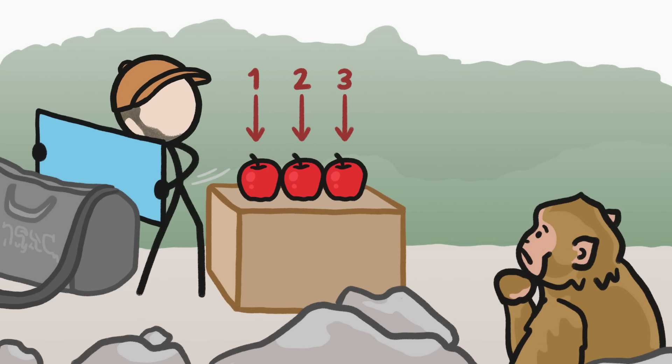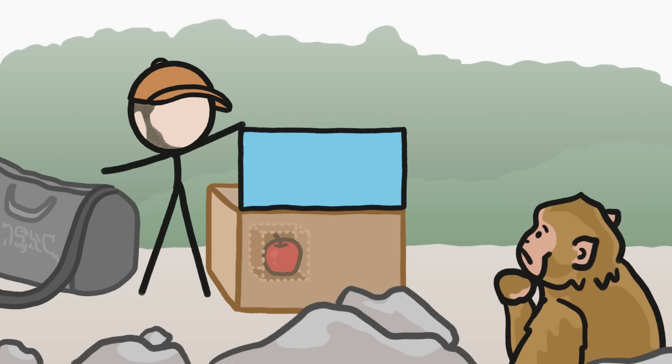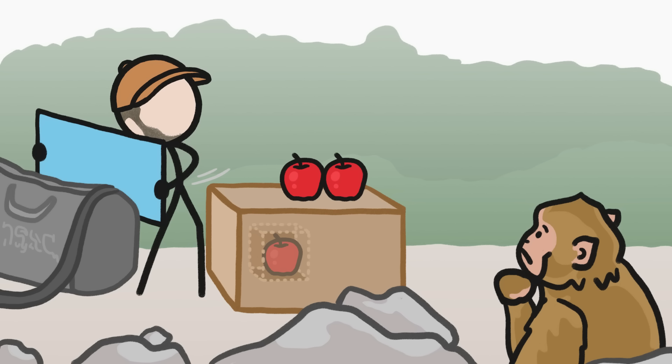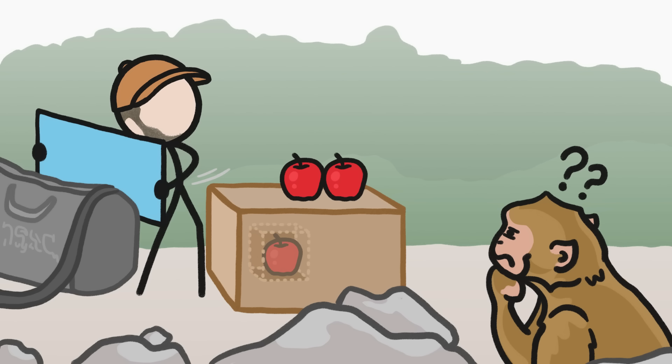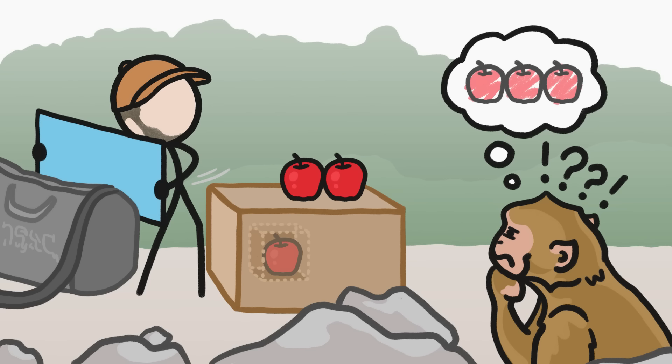Usually, there would be three apples there, but occasionally, thanks to a hidden chamber where I could stash or retrieve an apple, the number of apples on the platform wouldn't match the number of apples I'd removed from the bag. When those mismatches happened, the monkeys would stare as if they were surprised, or had even been tricked, which was super cool because it suggests that they have the ability to count.